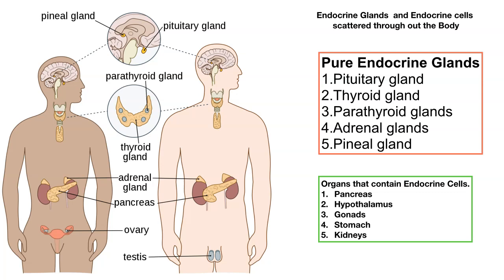Hi class, this is part two of the endocrine system. Part one was dedicated solely to the mighty pituitary gland. If you have not seen that video, you need to check that one out first. The master gland of the endocrine system — you must understand that gland and must understand the hormones coming from it. We are going to explore the rest of the endocrine system in this video.